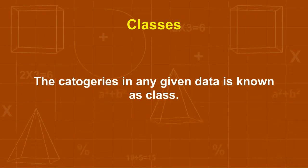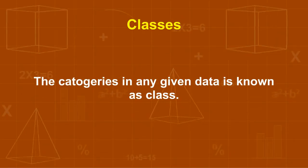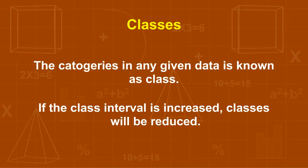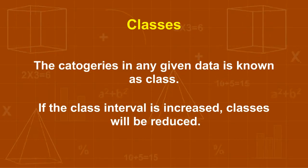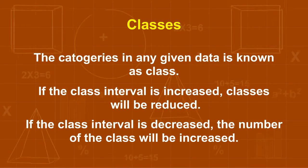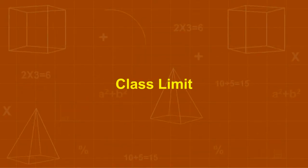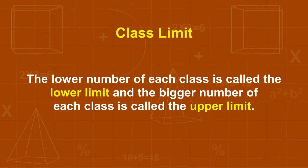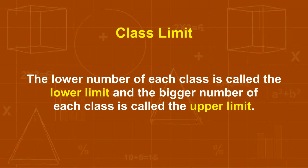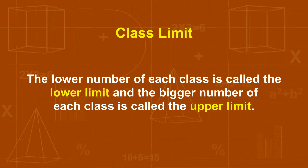Classes. The categories in any given data is known as class. If the class interval is increased, classes will be reduced. If the class interval is decreased, the number of class will be increased. Class limit. The lower number of each class is called the lower limit and the bigger number of each class is called the upper limit.